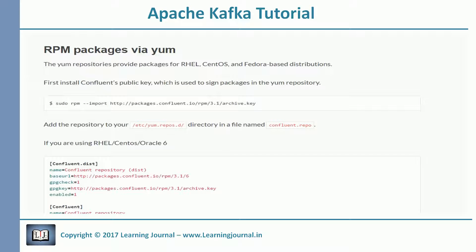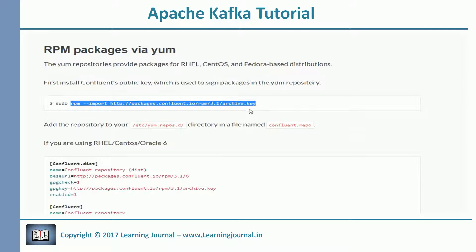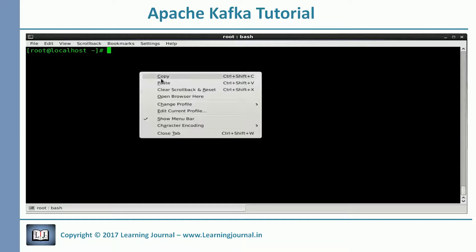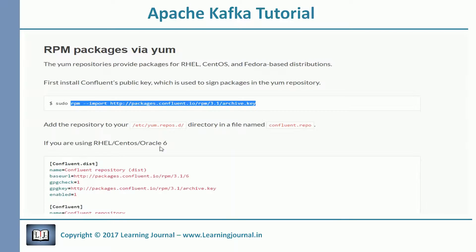As per the documentation, we need to install Confluent's public key. The next step is to create a repo file for yum.